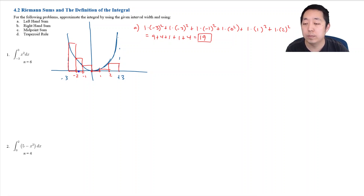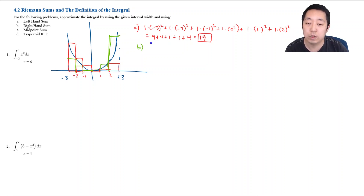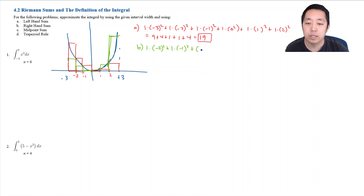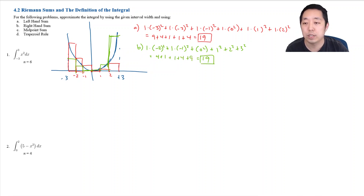For the right-hand sum, the right part of each rectangle touches the curve. The width is still 1, but now I use: (−2)² + (−1)² + 0² + 1² + 2² + 3² = 4 + 1 + 0 + 1 + 4 + 9 = 19, also equal to 19 — just by symmetry of the parabola.